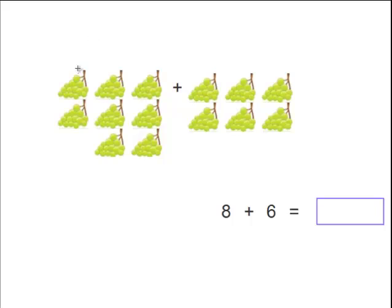We see here bunches of grapes and the problem 8 plus 6. Let's figure this out. Again we have 1, 2, 3, 4, 5, 6, 7, 8. Eight bunches of grapes over here plus 1, 2, 3, 4, 5, 6.